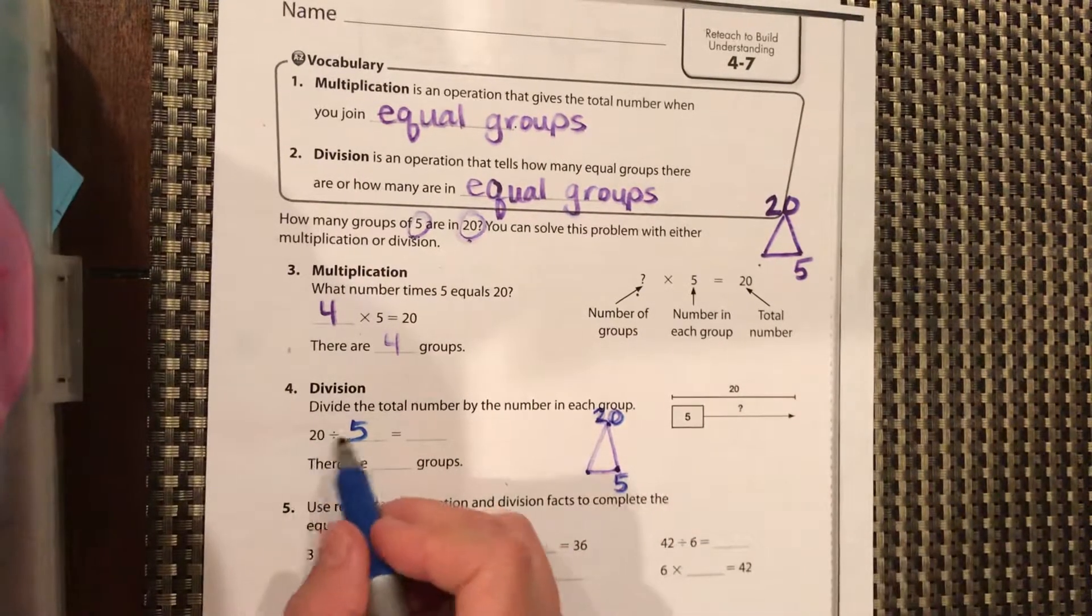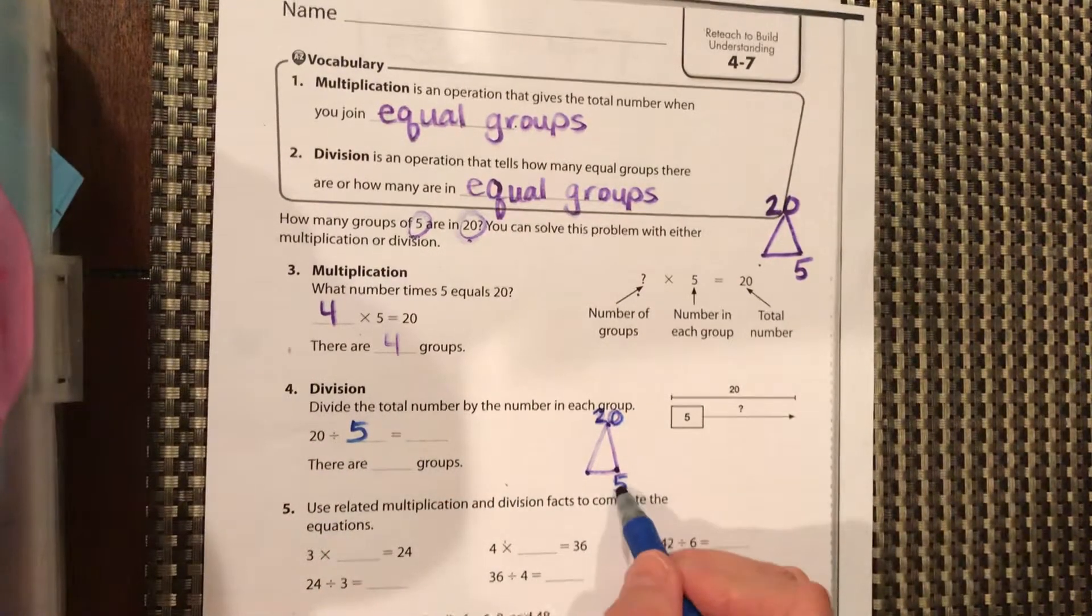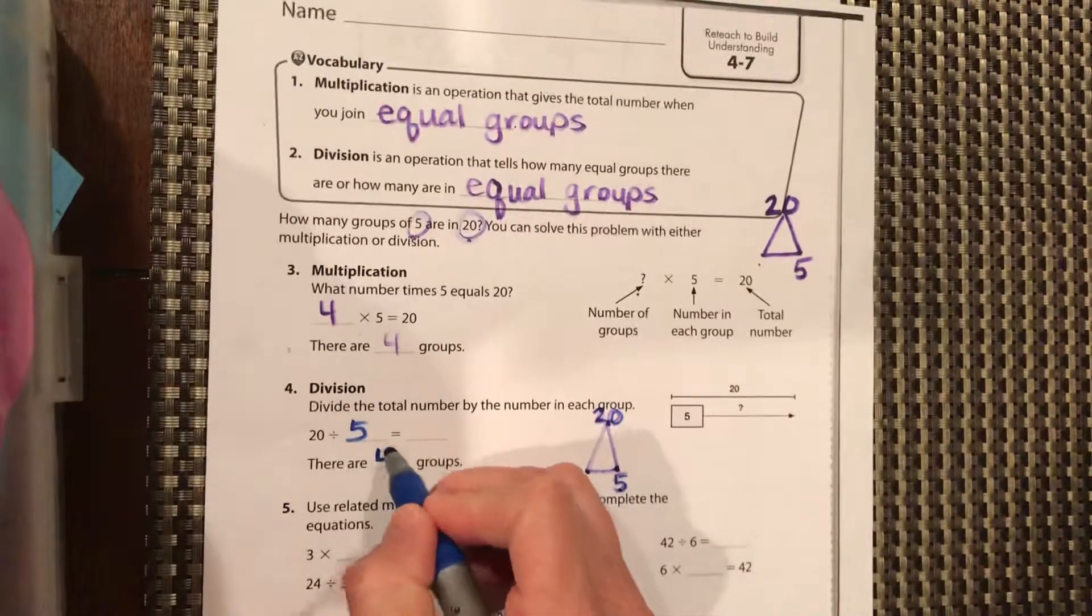Now again, to figure that out, we're going to ask ourselves five times what equals 20, and that is four.